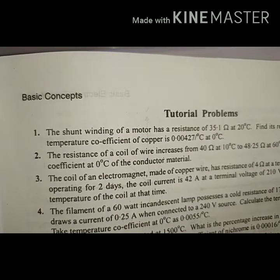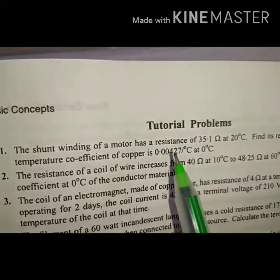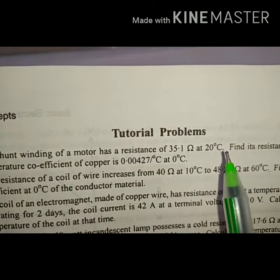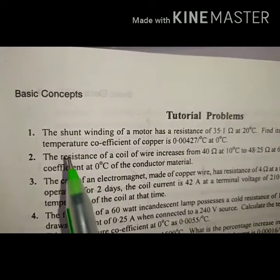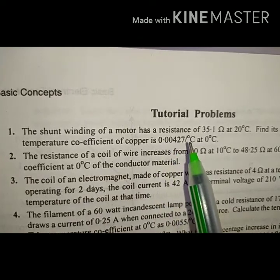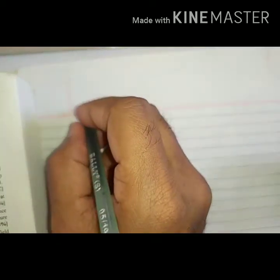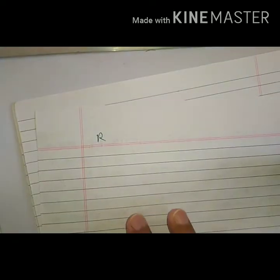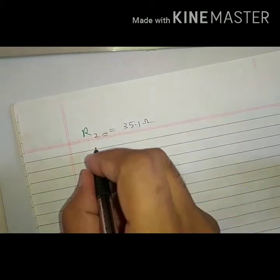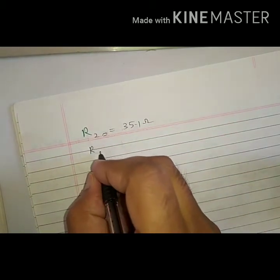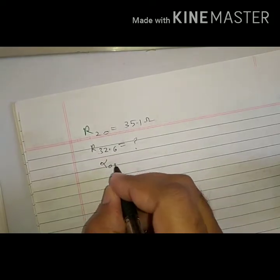Let us learn numericals on RTC. The very first question: the shunt winding of a motor has a resistance of 35.1 ohm at 20 degrees Celsius. Find its resistance at 32.6 degrees Celsius. The temperature coefficient of copper is 0.00427 per degree Celsius at 0 degree Celsius. Given: resistance at 20°C is 35.1 ohm. Find resistance at 32.6°C.